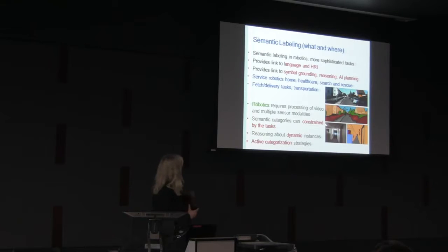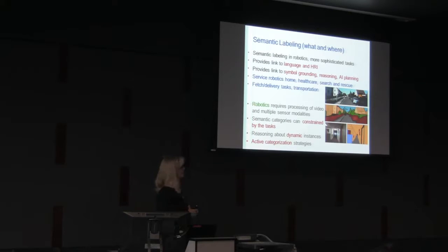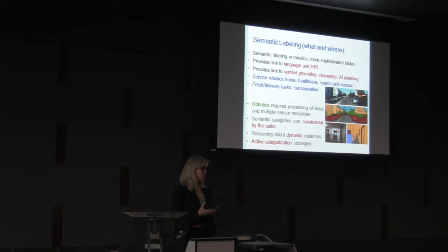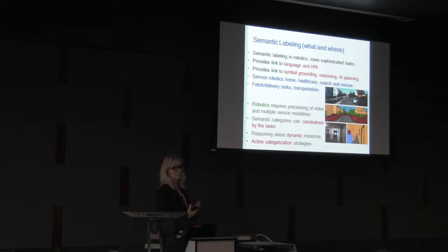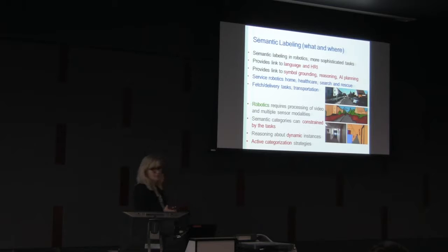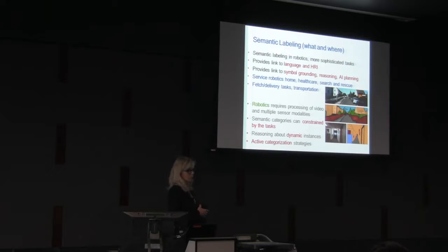Nonetheless, I think there are opportunities to rethink this problem in a robotics setting, with the hope that if we can provide some semantic understanding of the environment we'll be able to facilitate more sophisticated tasks. The semantic information could provide a link to language and interaction, and a mechanism for the symbol grounding problem, which is tightly coupled with more traditional AI planning techniques. I feel it's a very fruitful area to pursue.